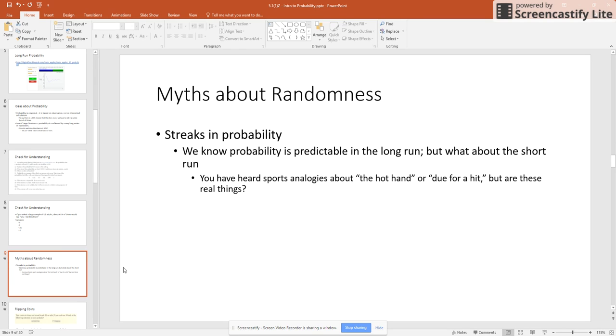So let's talk a little bit about randomness then. So streaks and probability. We know probability is predictable over time in the long run. But what about when we're in the short run? We've got just a couple of series happening, just a few tries. Is the idea of probability really going to still hold up here? So let's take a look at an example here.